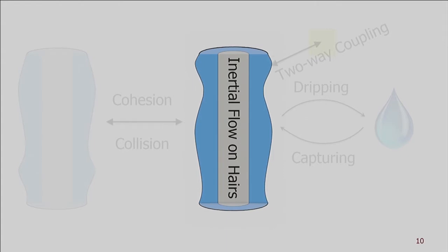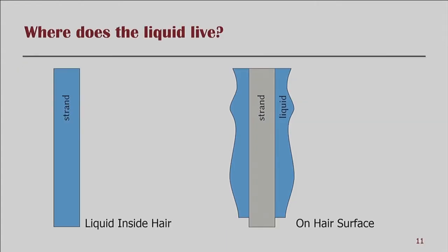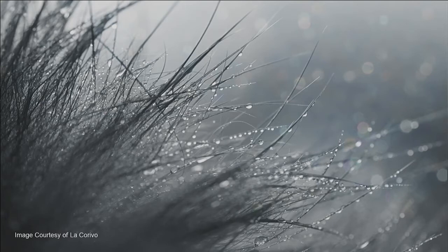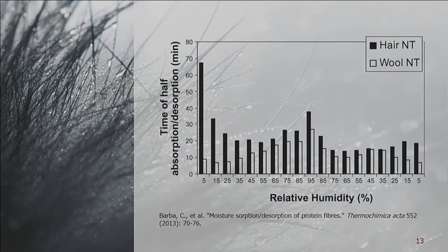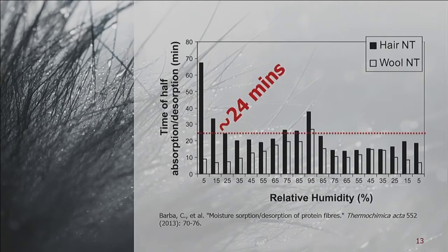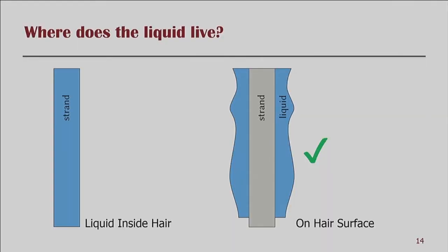Let's first focus on the reduced liquid. Before simulating wet hair, we ask: where does the liquid live? There are two kinds of models — either inside each hair or on a hair surface. Previous works treat hairs as foam and assume hairs can absorb liquid. However, as shown in photos of wet hair, the liquid appears as droplets on the hair surface. This contradicts the assumption of early simulation methods where liquid is simulated as a non-inertial flow inside hairs. Experimental results show the average time for hair to absorb liquid is 24 minutes for half absorption — in contrast to the dripping and flow observable in seconds. So we conclude the liquid we are interested in must live on the hair surface.